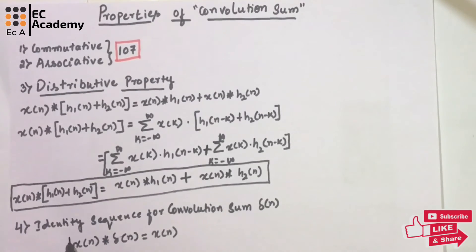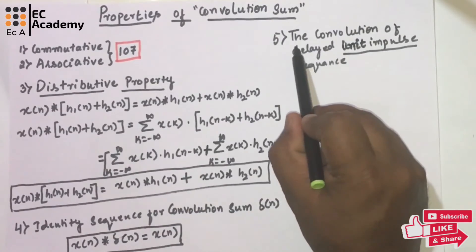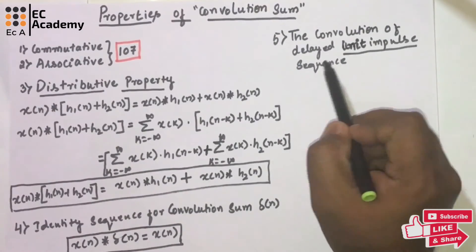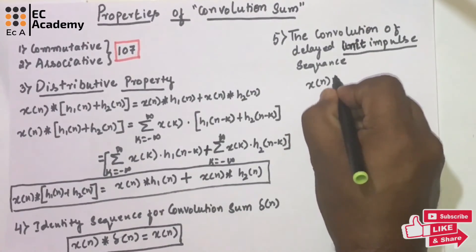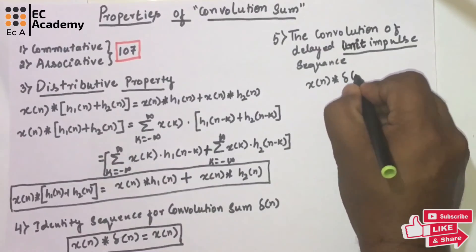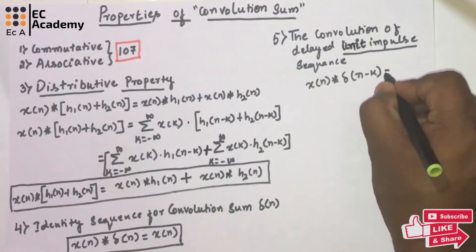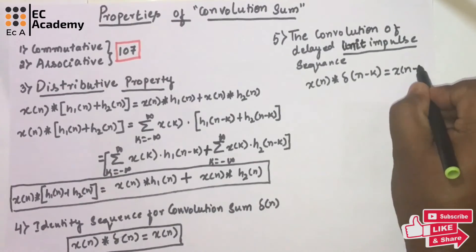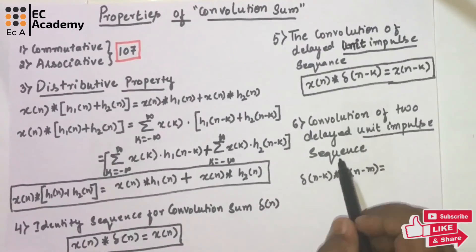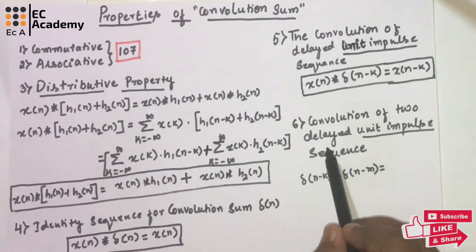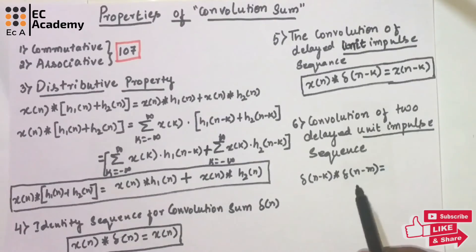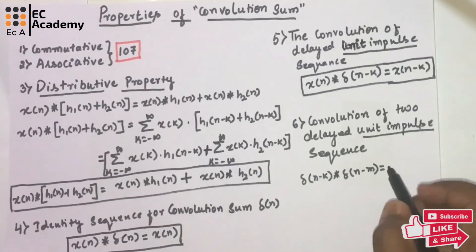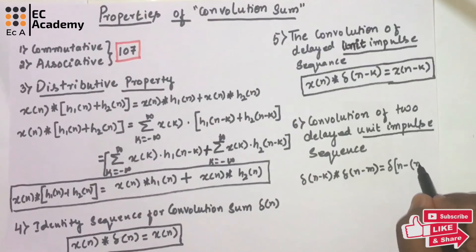The next property: the convolution of a delayed unit impulse sequence is given as x(n) convoluted with delta(n minus k) equals x(n minus k). Further, the convolution of two delayed unit impulse sequences — delta(n minus k) convoluted with delta(n minus m) — can be written as delta(n minus m plus k).